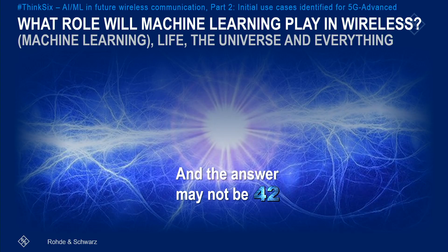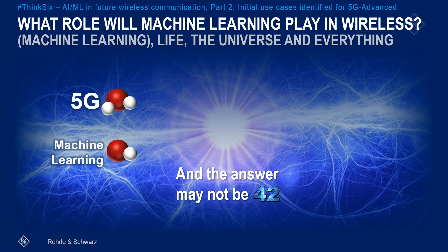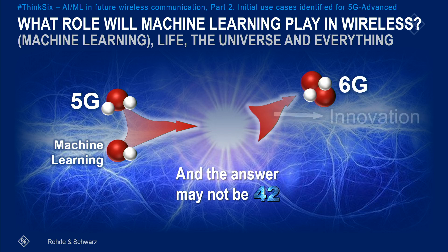During nuclear fusion, two hydrogen isotopes — deuterium and tritium — collide at super-high speeds to fuse into a much heavier nucleus, that is helium, releasing a huge amount of energy and one neutron. Using this analogy, we can replace deuterium and tritium with 5G and machine learning, which fuse to become 6G and release some innovation compared to the previous technology.